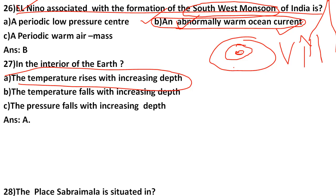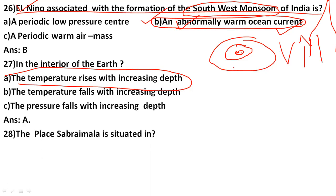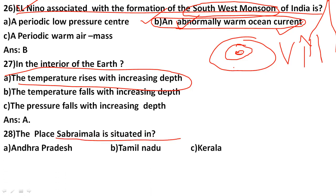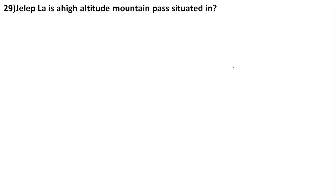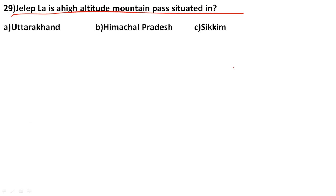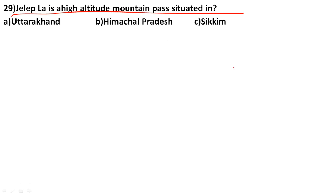The place Sabarimala is situated in which state? The correct answer is C, Kerala. Also, Jelep La is a high-altitude mountain pass situated in Sikkim.